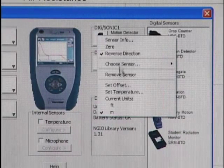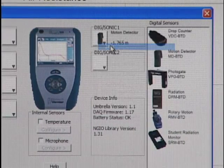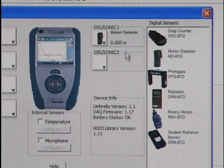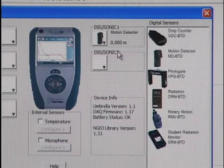Next step is to zero the motion detector with nothing under it but the floor. You can hear the motion detector click a bit and then the live readout shows zero.